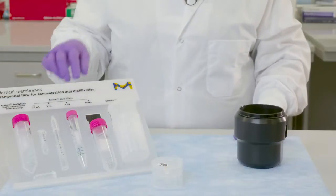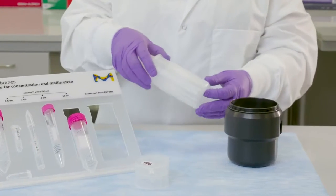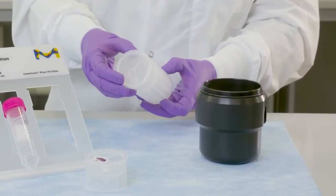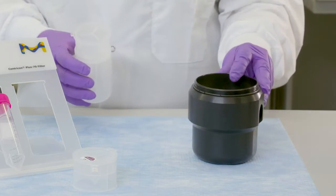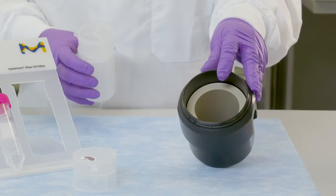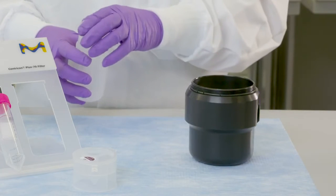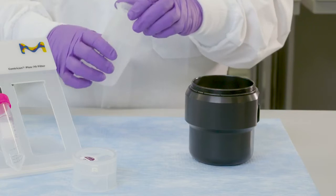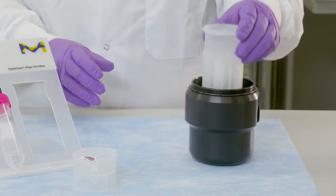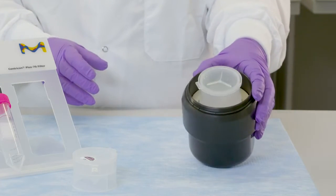The Centricon Plus 70 device has a diameter of 60 millimeter, length of 121 millimeter, and has a flat bottom. The rotor used is a swinging bucket rotor with adapters capable of handling 250 mil bottles. Make sure the device is fully assembled and snapped together. Do not use a fixed angle rotor as your sample may leak out of the cap.